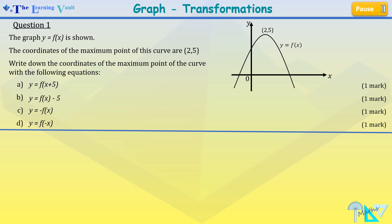Now for part b of the question, we're told to find the coordinates of the maximum point of the curve when y equals fx minus 5. This is a vertical translation where it's 5 units down, so the x coordinate is still 2 but the y coordinate is 5 minus 5. So our new coordinate is 2 and 0, and you get one mark for this.